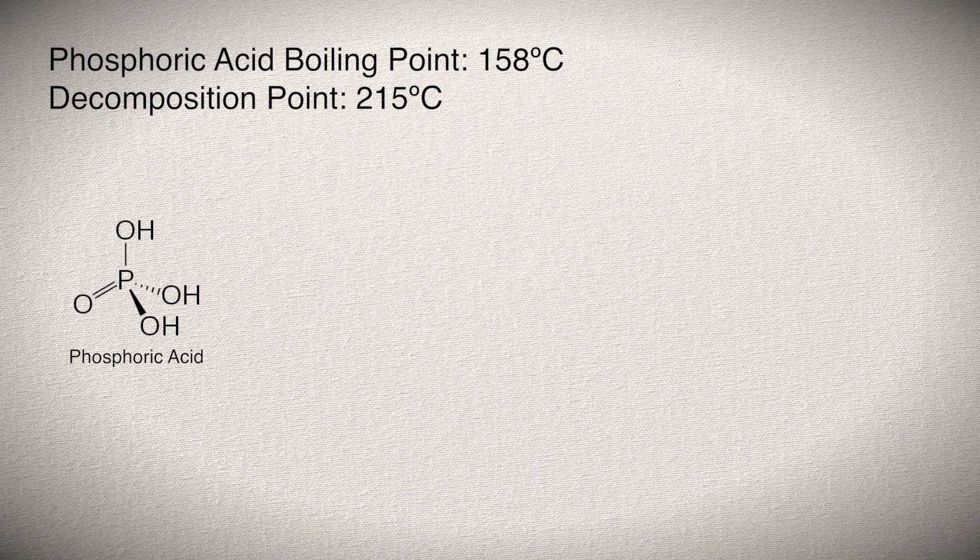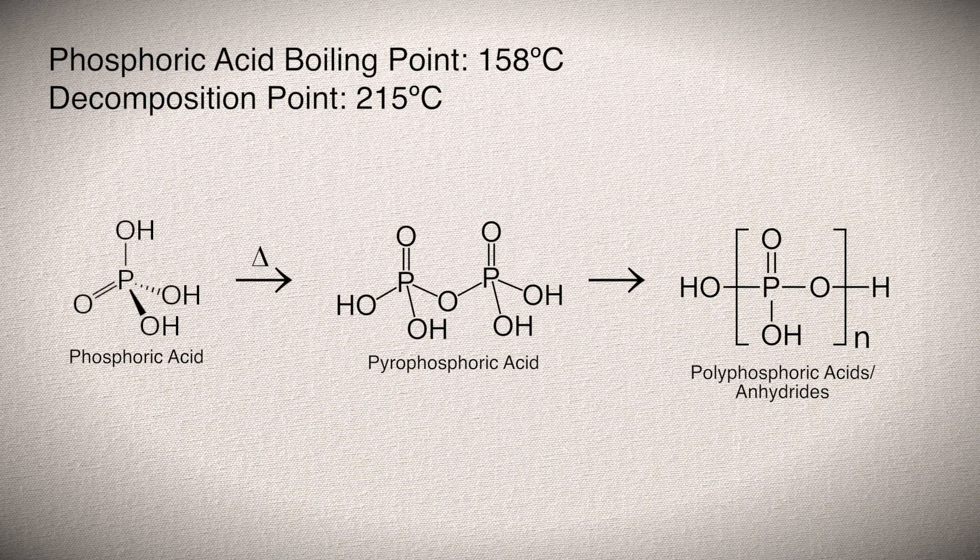At high temperatures in nearly anhydrous conditions, the phosphoric acid dehydrates to form pyrophosphoric acid. This pyrophosphoric acid can then polymerize to form polyphosphoric acids and anhydrides of different chain lengths and cyclic structures. The three categories exist in equilibrium at high temperatures. These second two compounds are characteristically thick and incredibly viscous compounds that are typically solids at room temperature.